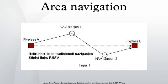Area navigation used to be called Random Navigation, hence the acronym RNAV. RNAV can be defined as a method of navigation that permits aircraft operation on any desired course within the coverage of station-referenced navigation signals or within the limits of a self-contained system capability, or a combination of these.